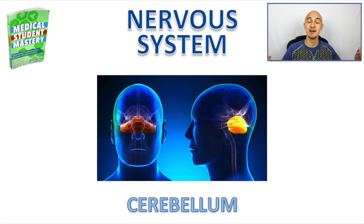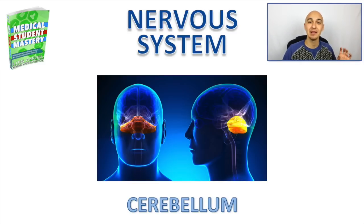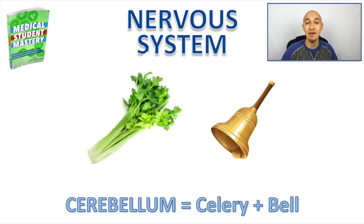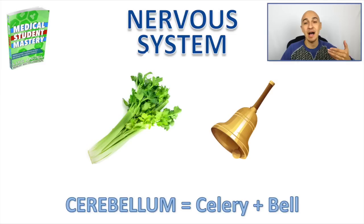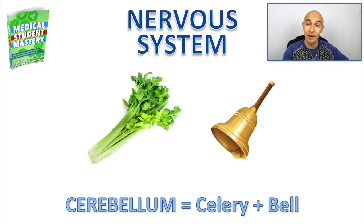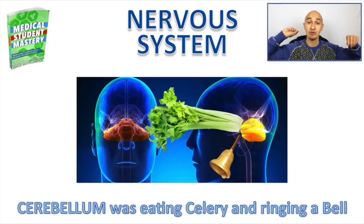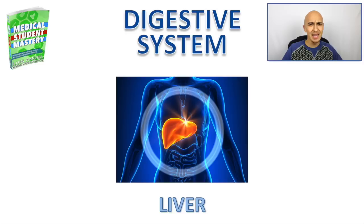Next is the nervous system — specifically the base of the brain, which is the cerebellum. As you can see in the image, it's at the bottom portion. Convert the name into an image: I picture celery for the 'cere' part and a bow for the 'bellum' part. So the story is the cerebellum was eating celery and ringing bells — picture that right at the base of your brain.